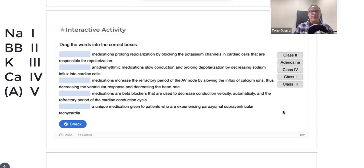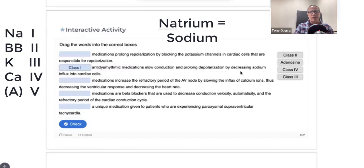So now let's use our mnemonic, our NAB-K-C-A. So the N-A from NAB would be Class 1. And we saw that it was this answer, anti-dysrhythmic medications slow conduction and prolong depolarization by decreasing sodium influx into cardiac cells. So 1 is the N-A in NAB, Class 1.